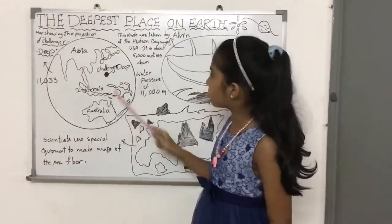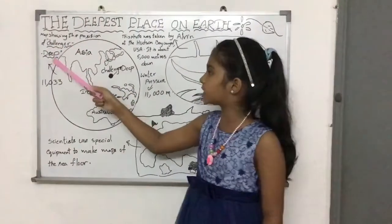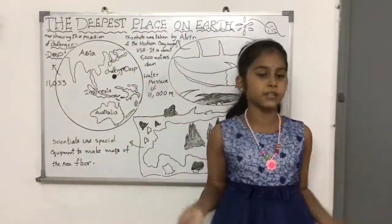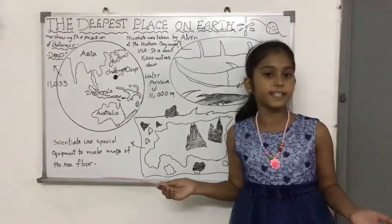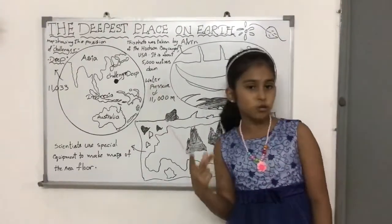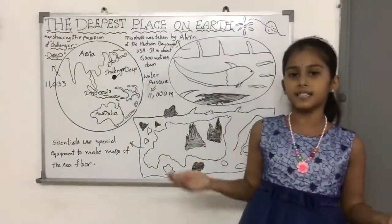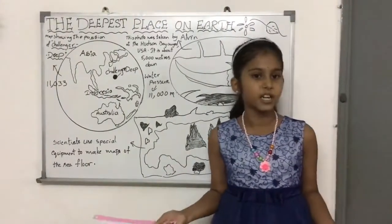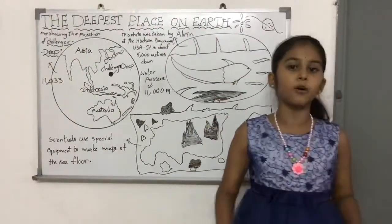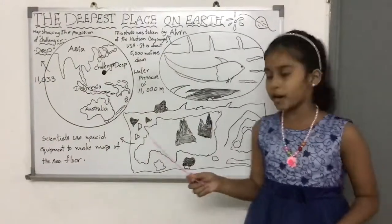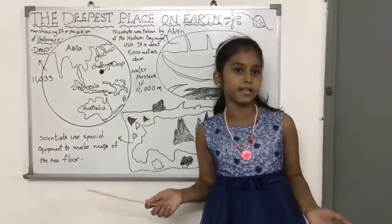Now, this is the map showing the position of the Challenger Deep under the Pacific Ocean. Did you also know, in 1960, two scientists used a submersible called Trieste to go to the bottom of Challenger Deep. And also, they researched the Trench.